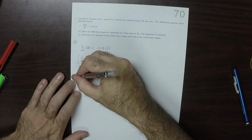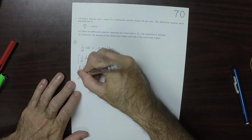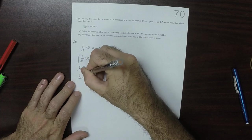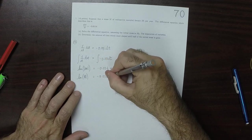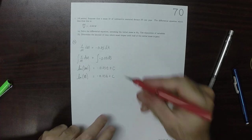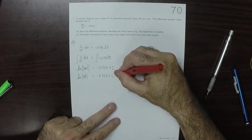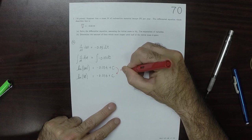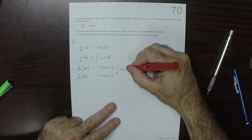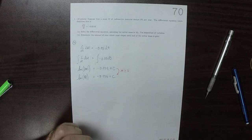We can drop the absolute value because we're talking about a physical scenario in which we're talking about a mass, so the mass necessarily must be non-negative.